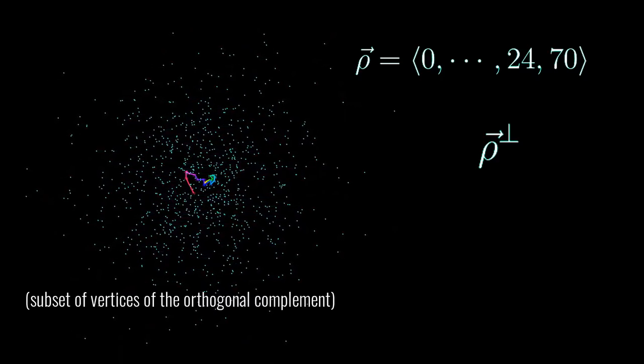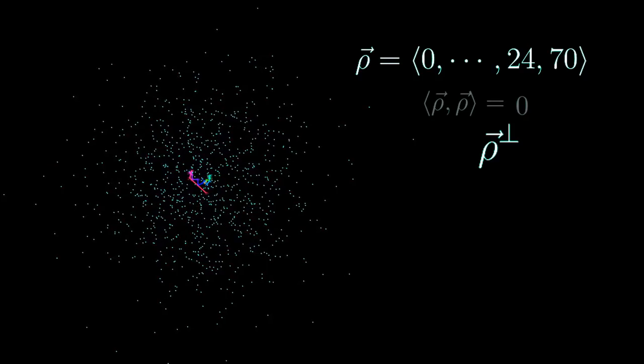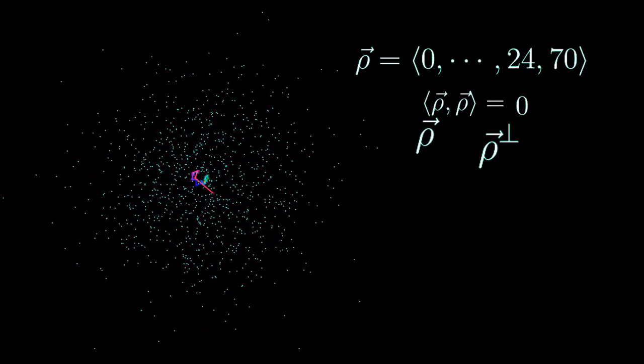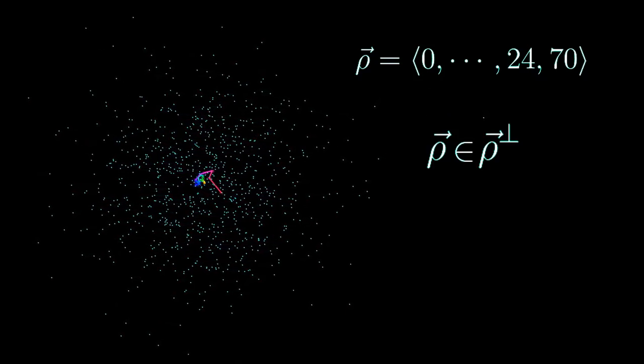So this now has dimension 25. And now because rho has inner product 0 with itself, rho is actually in the 25-dimensional lattice that's orthogonal to rho.